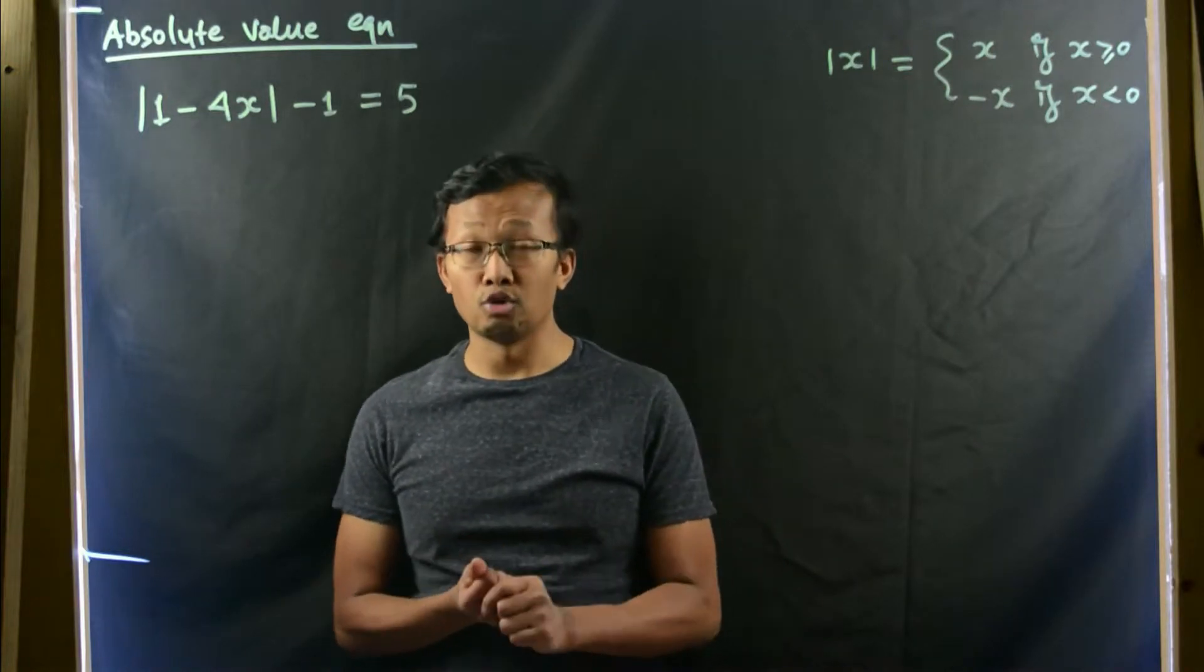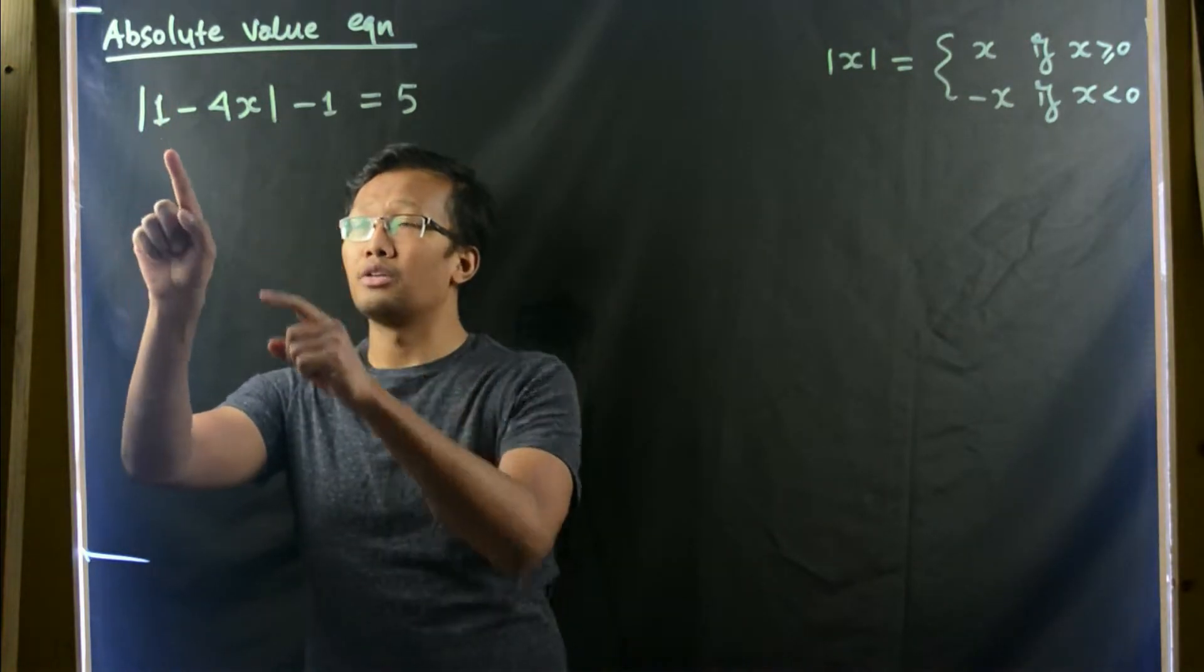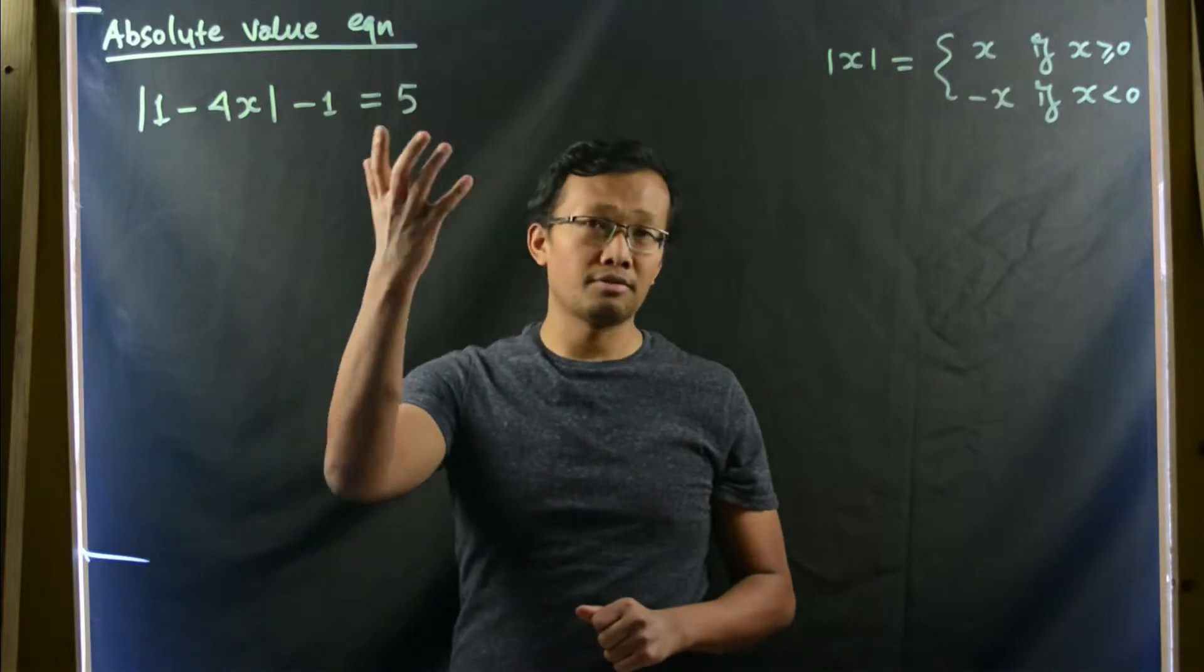Let's solve an absolute value equation: absolute value of 1 minus 4x minus 1 equals 5.